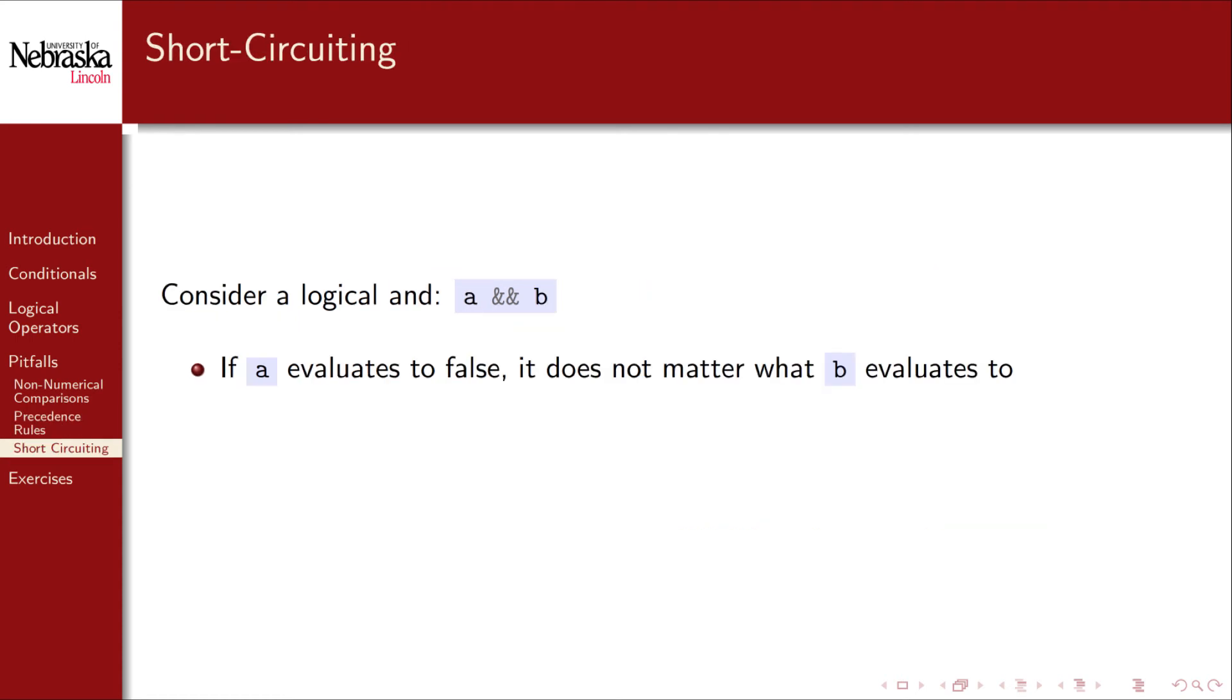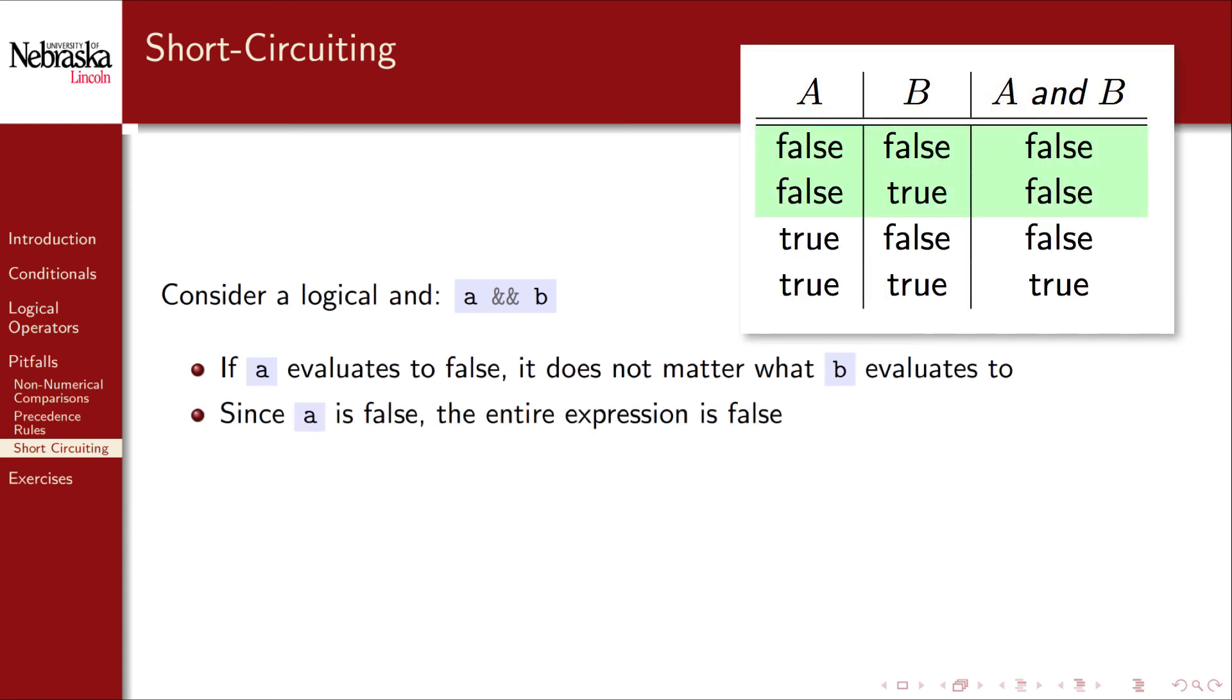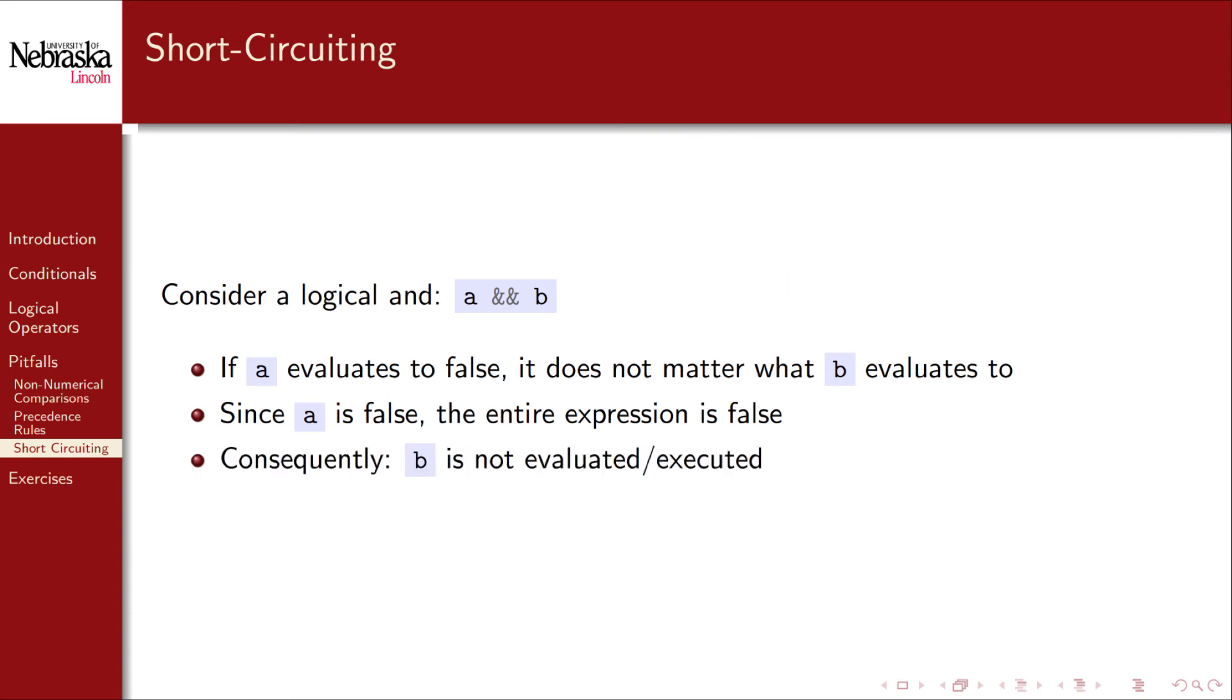Finally another issue is that of short circuiting. Consider a logical AND operator on two variables A and B. If A evaluates to false then it does not matter what B evaluates to. Since A is false the entire expression is false whether B is true or false. Consequently B is ignored and not evaluated.